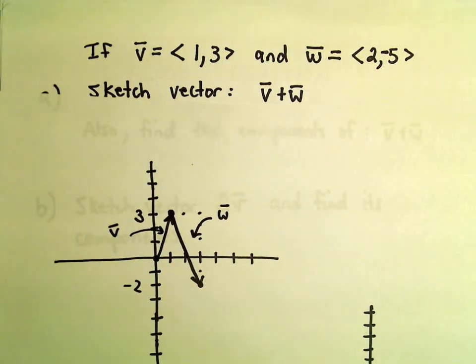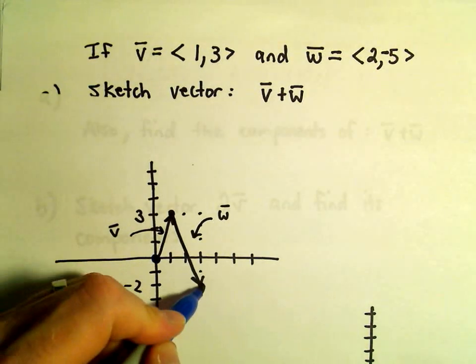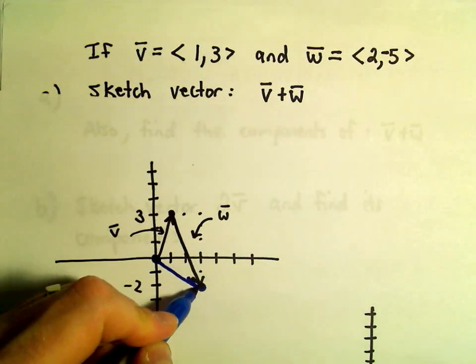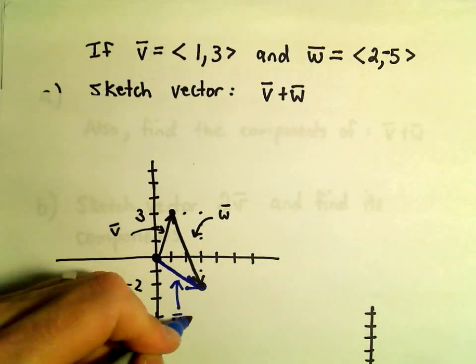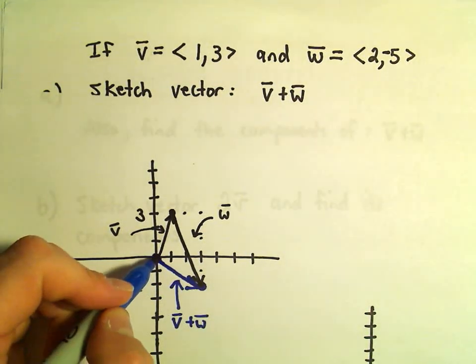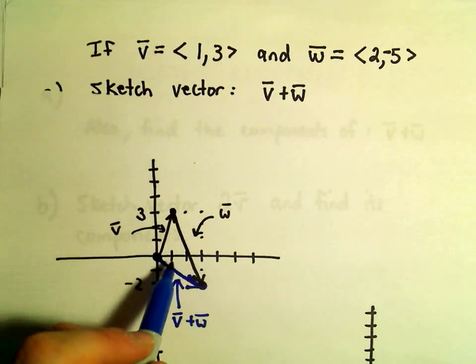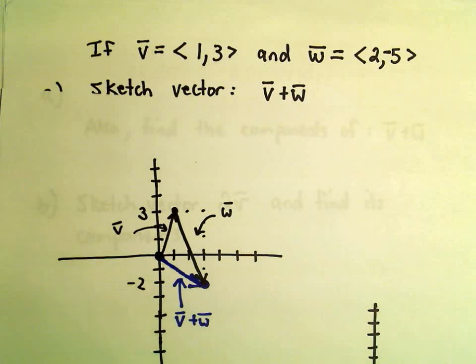Now what we do is, wherever our original vector started and wherever it stops, we connect those, and that's going to be our vector v plus w. So it starts at the origin, and in this case it's kind of going, it looks like 3 units to the right and then 2 units down is what it looks like to me.